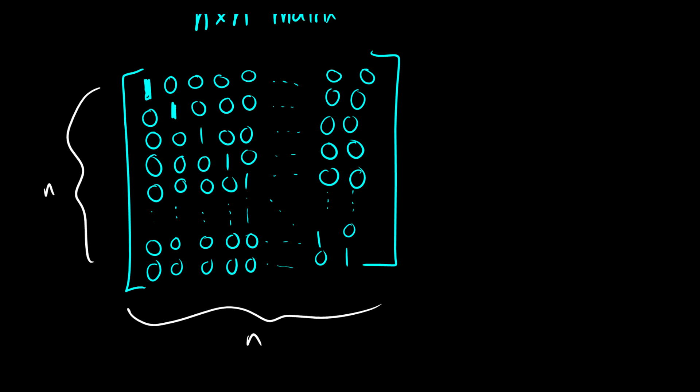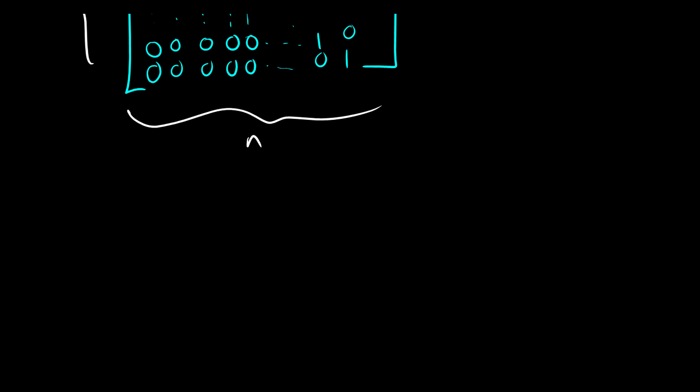If I take, for instance, IN and multiply it by the vector x, which is in n dimensions, the vector x has to be in n dimensions, then we'll get x back. If I take the identity matrix and multiply it by some matrix A, then we get the matrix A back. So whatever we multiply by IN, as long as it's the same dimension, we will get the corresponding item back. That's the identity matrix.